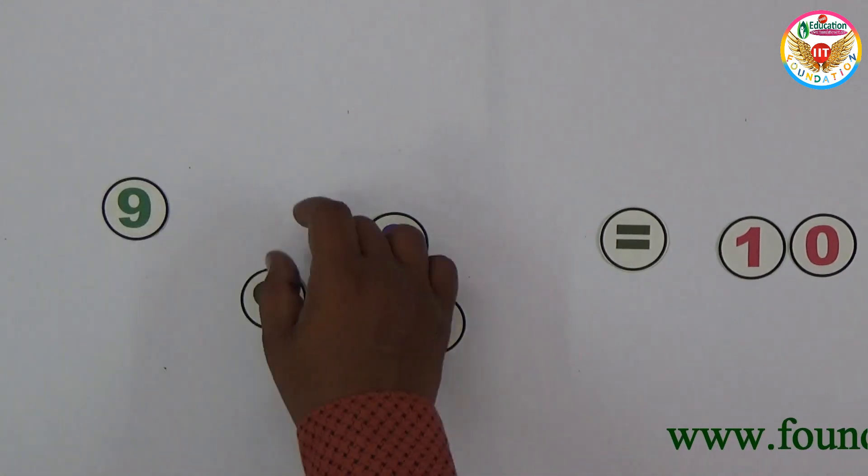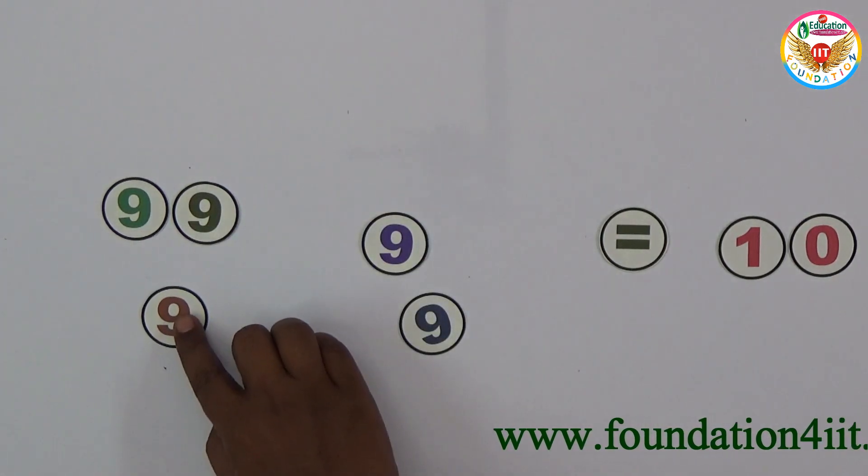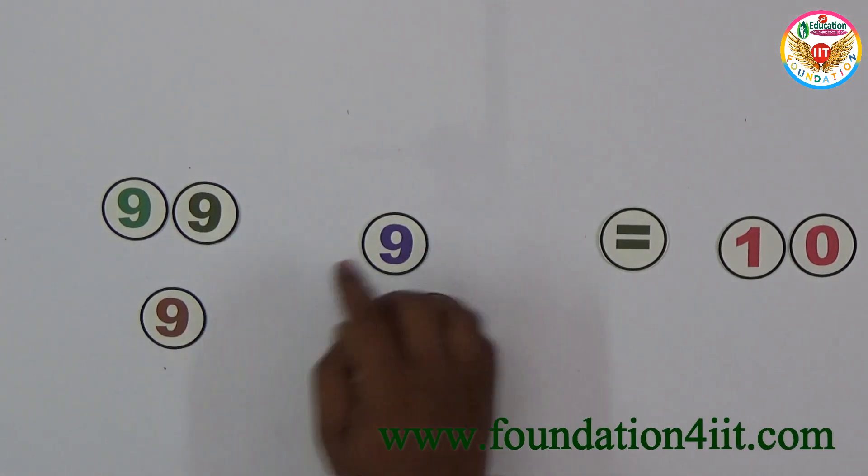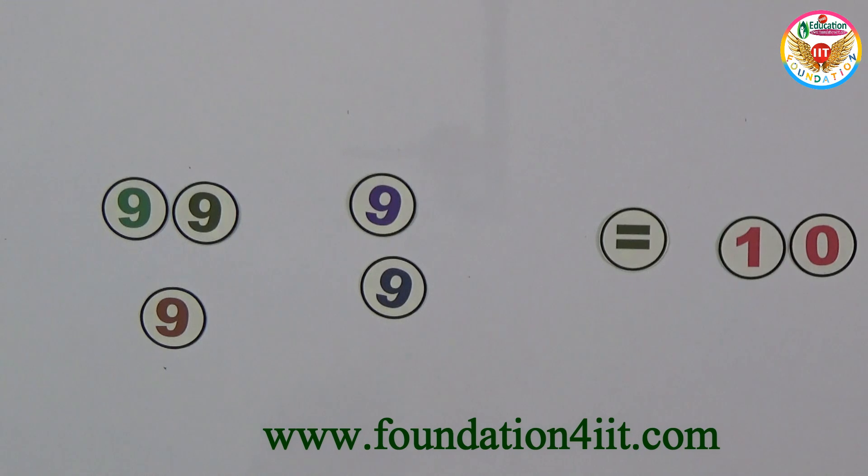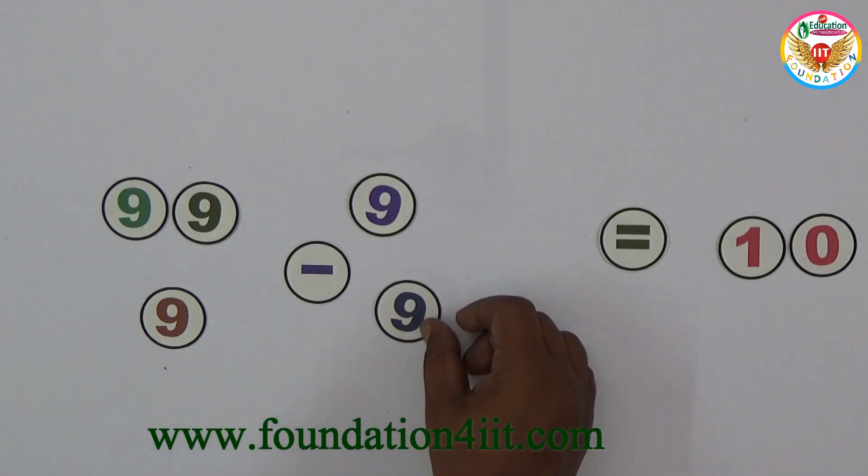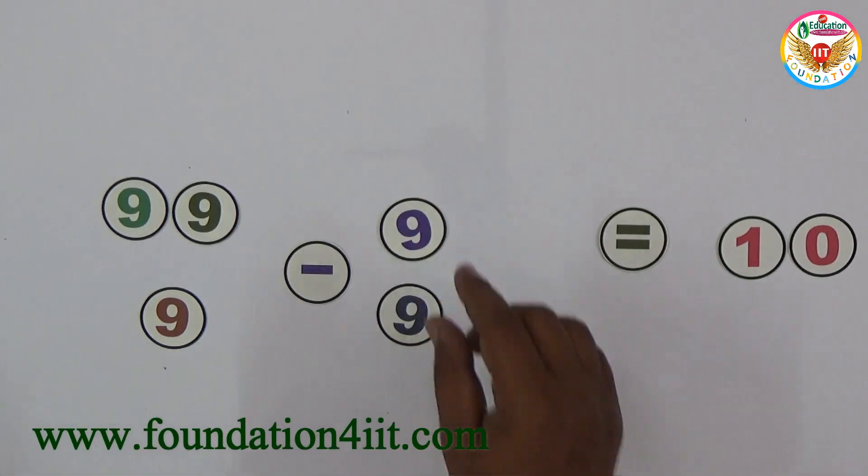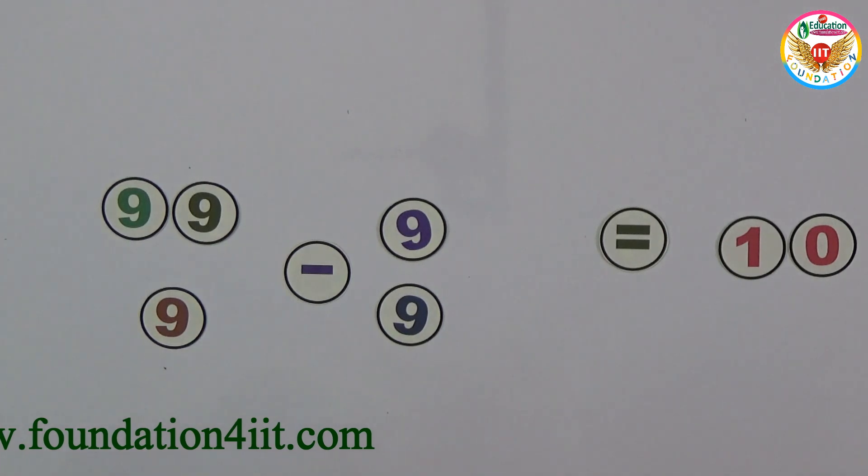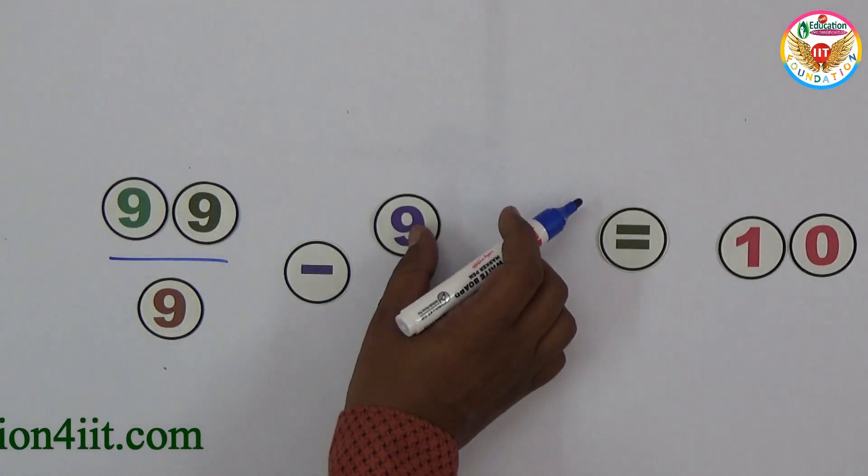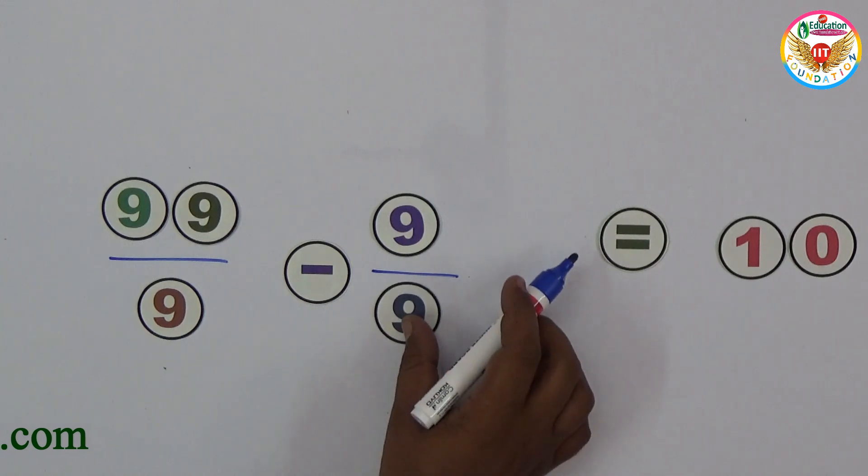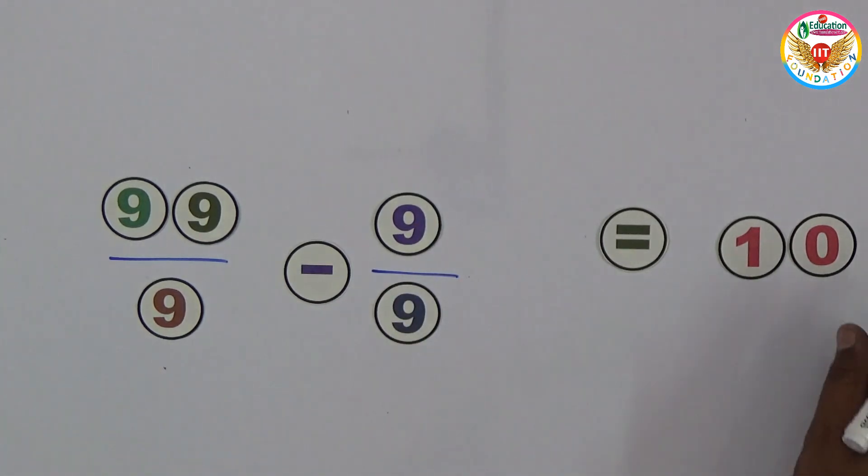We get 11 from 99 divided by 9, and 1 from 9 divided by 9. So 99/9 - 9/9 = 10. This is one of the solutions.